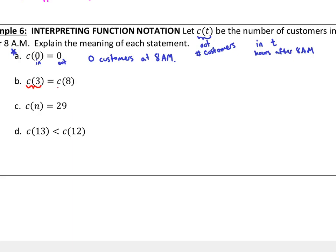Letter B. Here I'm comparing two outputs. The number of customers. You spell customers C-U-S-T-O-M-E-R-S. At, let's see, three hours after 8 a.m., that's 11 a.m., is equal to, or let's just say equals, the number of customers at, what would C of 8 be? Eight hours after 8 a.m. would be 4 p.m. And I just counted those off, you know, 8, 9, 10, 11, 12. That gets us to noon. That's four hours. And then we still got four more to go, right? 1 o'clock, 2 o'clock, 3 o'clock, 4 o'clock in the afternoon.